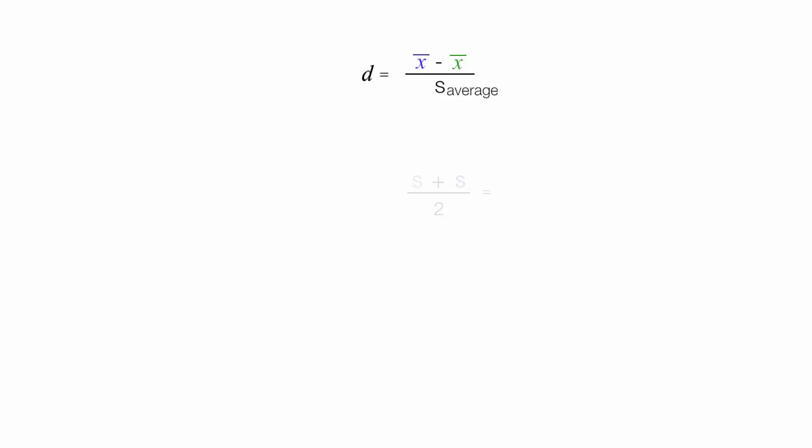Let me put some numbers in here. We have the mean, which is 5.10 for the control group, and the mean of the experimental group is 7.80. The standard deviation is 1.6 and 2.15.